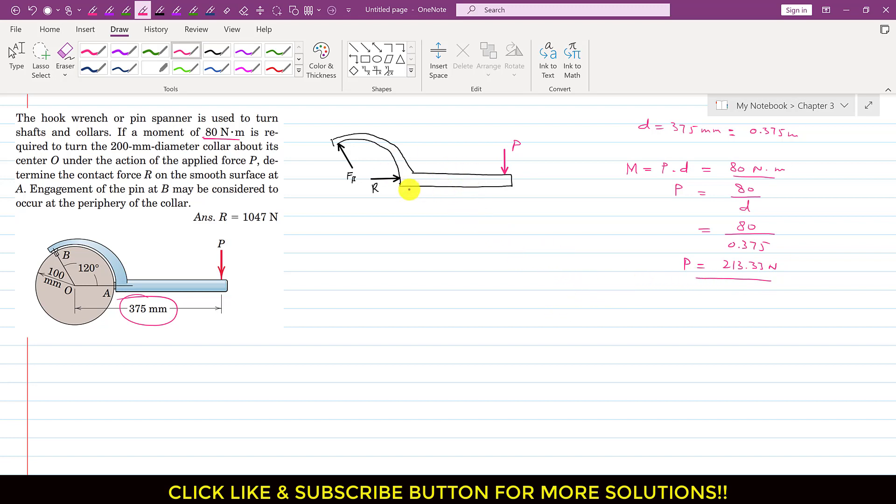Now if we consider this as a free body diagram and apply the summation of moment about point B equals 0, this point is point B and here we have point A. Now let us assume that the counterclockwise moment is positive. So now as we can see, this R is producing counterclockwise moment about point B.